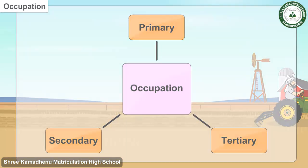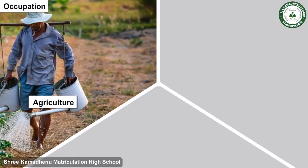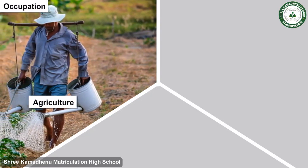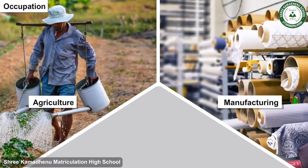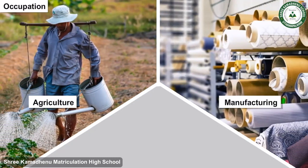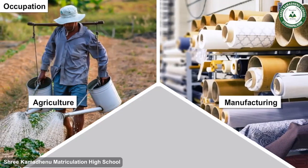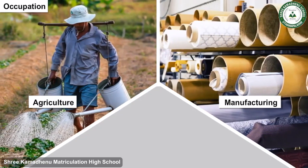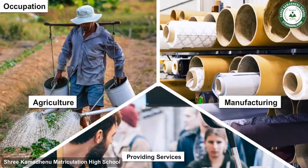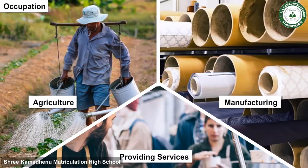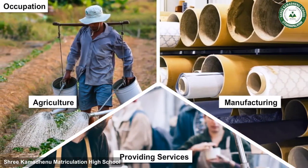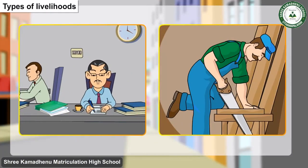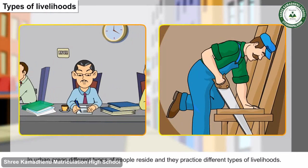In primary occupation, people are engaged in agriculture. In secondary occupation, people are engaged in manufacturing and processing of raw material. In tertiary occupations, they are engaged in providing services.